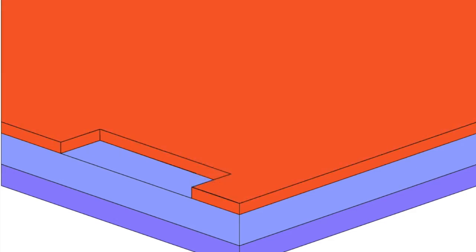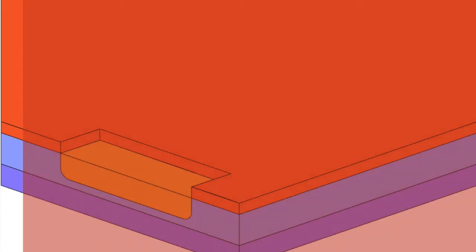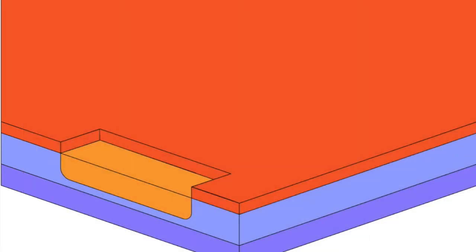N-type dopant atoms such as phosphorus, arsenic, or antimony are implanted using an ion implanter through the openings in the silicon dioxide into the epitaxial layer, creating N-wells. These N-wells will provide space to later implant P-type dopants to form the source and drain of the PMOS devices. The next step is a heat treatment called annealing. Annealing is necessary to repair crystal damage caused by the implant process and to electrically activate the implanted atoms.